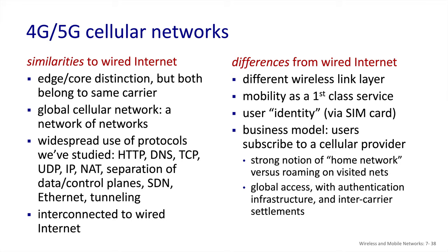Where the mobile wireless networks differ is primarily at layer 2, which differs significantly from the 802.11 standards. Part of this is to enable much greater levels of mobility than are anticipated for wireless LANs. There is also a much stronger notion of billing, where a device's identity is tracked in order to bill the associated charges back to the correct user. And because money is involved, authentication is also required to prevent unauthorized account usage.